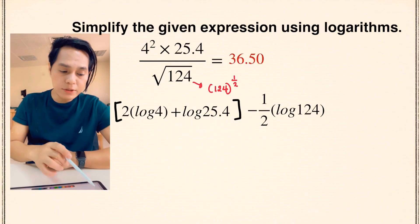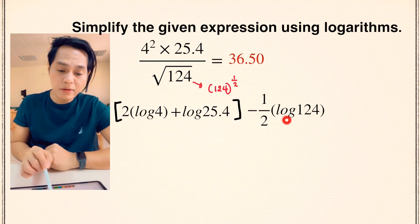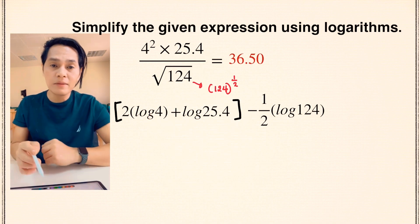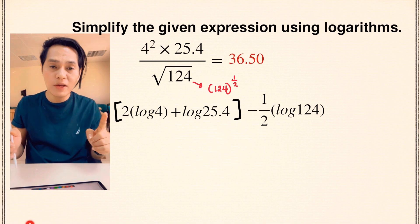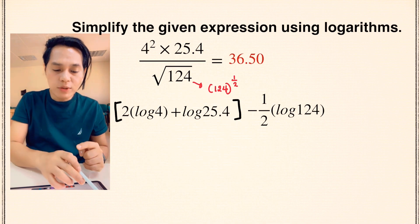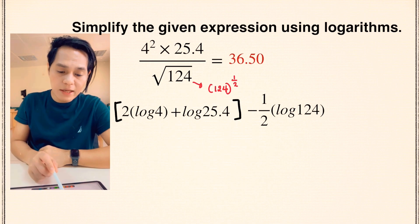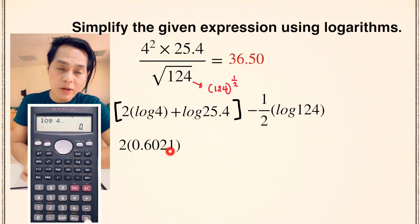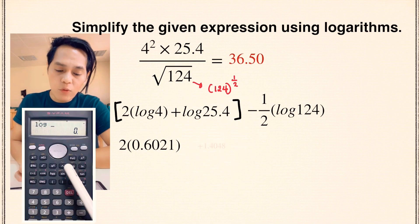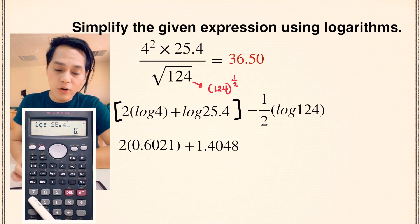Our next thing to do now is to simplify these expressions using logarithms. So make use of the calculator and I'll be attaching here in the video how we are going to find out the values of these logarithms. So 2 times the log of 4, the log of 4 should be 0.6021. And the log of 25.4 which is 1.4048 in 4 decimal places.